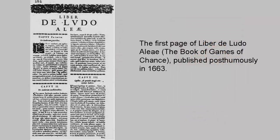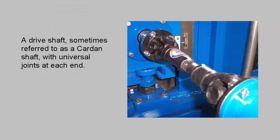Cardano was notoriously short of money and kept himself afloat by being an accomplished gambler and chess player. A book by him about games of chance, written in the 1560s but published posthumously in 1663, contains the first systematic treatment of probability as well as a section on effective cheating methods. Away from mathematics, Cardano invented several mechanical devices including the combination lock, the Cardano suspension consisting of three concentric circles that allow a supported compass to rotate freely, and the Cardano shaft, which allows the transmission of rotary motion at various angles and is used in vehicles to this day.